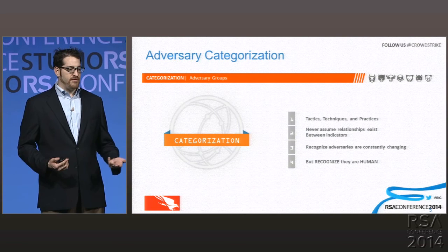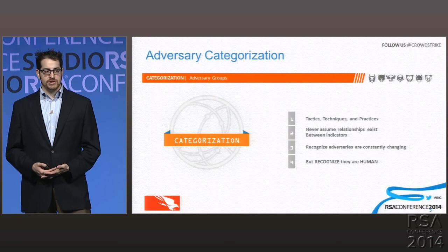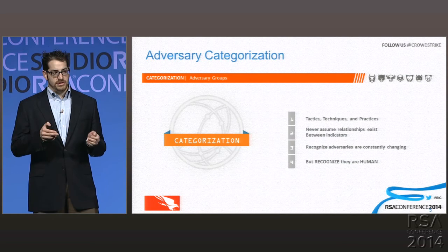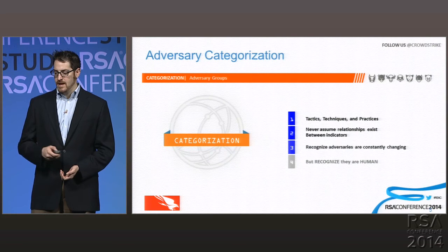My understanding of what malware they use, what ISPs they prefer for their command and control, knowing what domain types they like to use when registering C2, knowing the mutexes and registry keys — all of these things allow you to start categorizing these adversaries and tracking them over time. And that is because they are human.